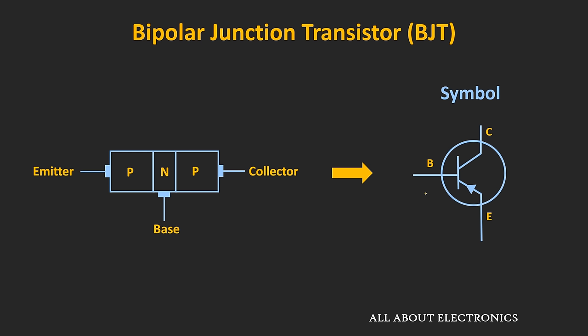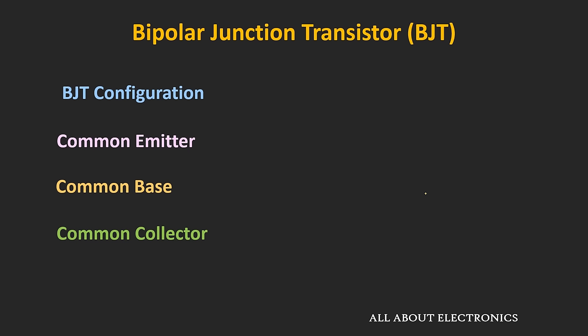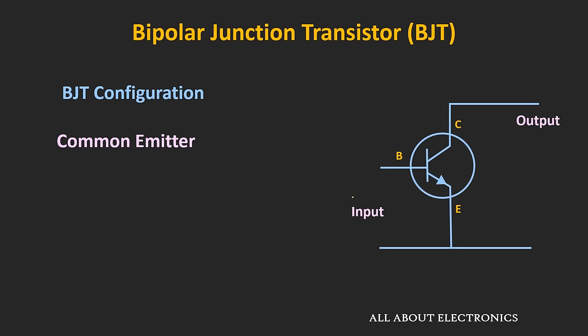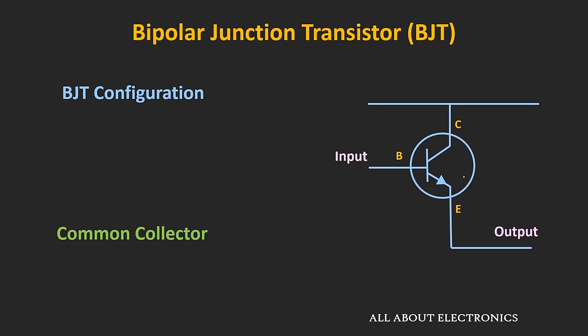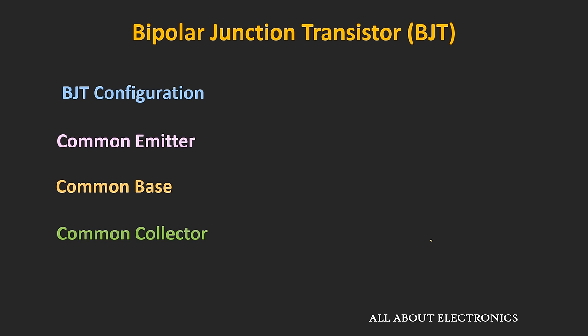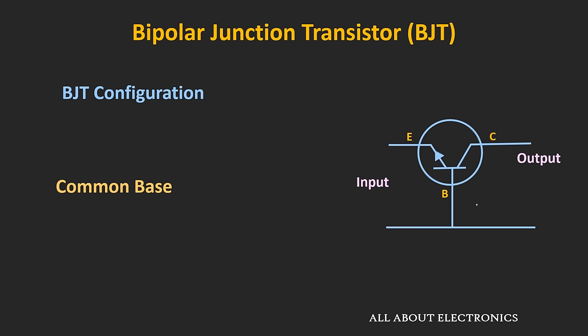When the BJT is used for amplification of a signal, it is operated in the active region, and there are different ways to configure it. In the common emitter configuration, the emitter terminal is common between input and output, so the input signal is applied between the base and the emitter, and the output is measured between the collector and the emitter. In the common collector configuration, the collector terminal is common between input and output. And in the common base configuration, the base terminal is common between input and output. Each configuration has its own advantages and disadvantages, and the BJT can be configured in any of these three depending on the requirement.